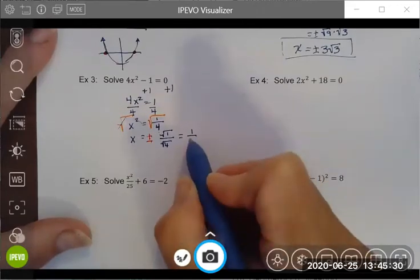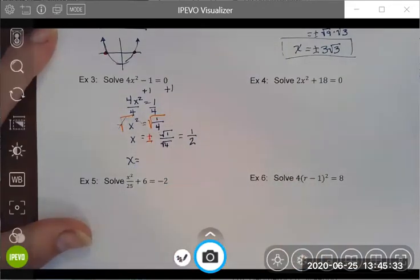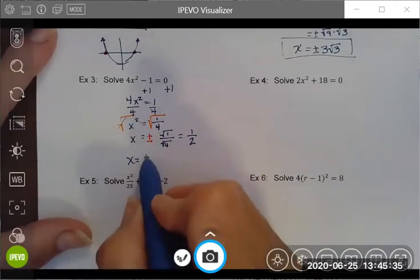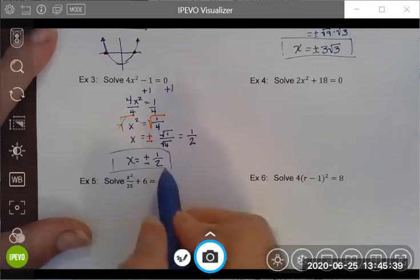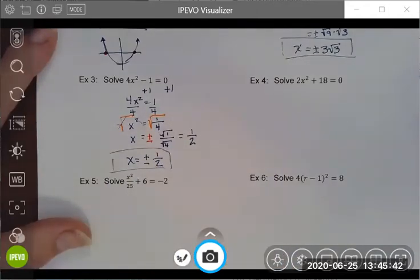Each of these can be independently simplified. The square root of one is one. The square root of four is two. So I'm left with solutions of plus or minus one-half.